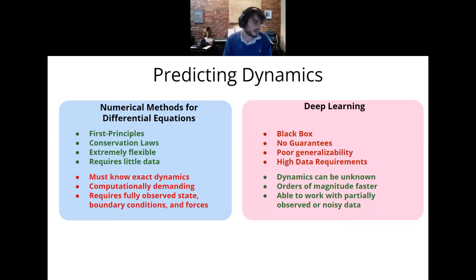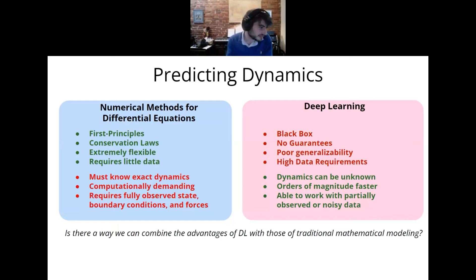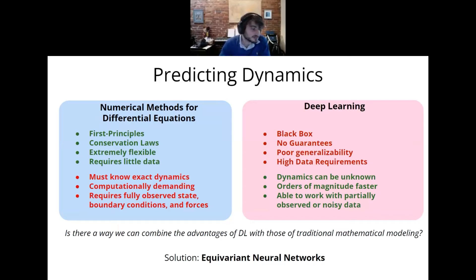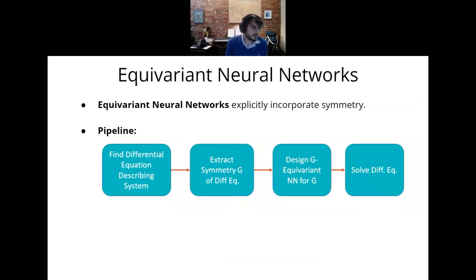It's kind of a poor bargain — I want the advantages of each of these things but there's a trade-off. The main focus of my research is: is there a way to combine the advantages of deep learning with traditional mathematical modeling? What I'm going to talk about is using equivariant neural networks as a way to get that knowledge we have into what would otherwise just be a black box. Equivariant neural networks are neural networks that explicitly incorporate prior knowledge of symmetry.